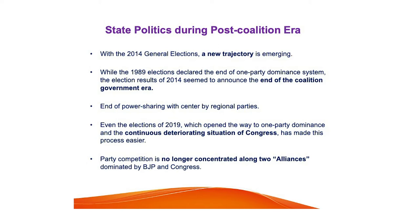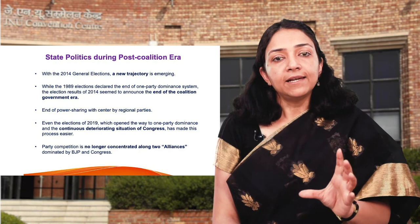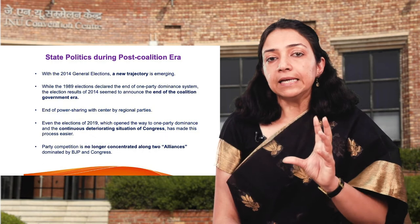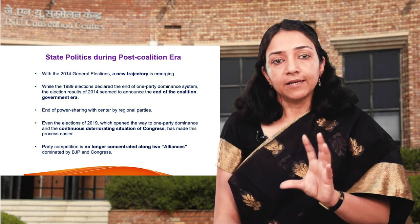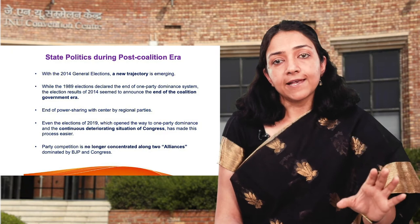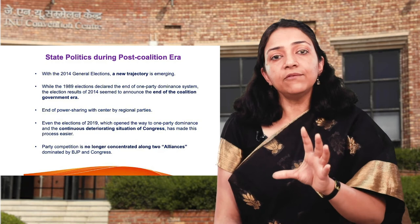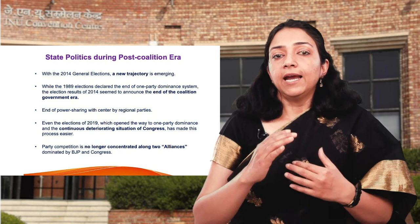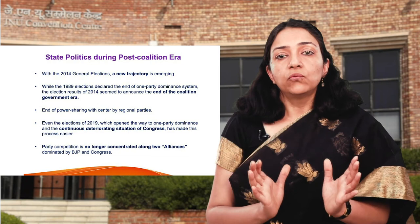After the coalition government era, we focus on the post-coalition era. With the 2014 general elections, a new trajectory emerged. While the 1989 elections indicated the end of one-party dominance, the 2014 elections announced the end of the coalition government era. The 2019 elections further intensified this process and opened the way to one-party dominance.